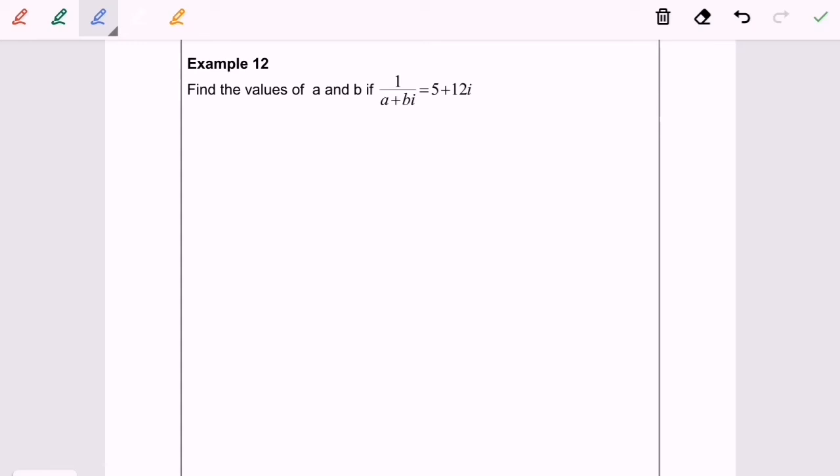Hello everyone, so now I'm going to discuss topic 1.2 complex number for example 12. Find the values of a and b if 1 over a plus bi equals 5 plus 12i.